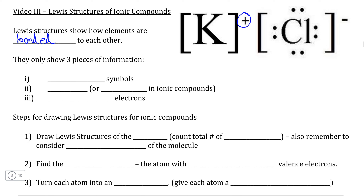In ionic compounds, this is done by highlighting the charge, because it is the attraction between the positive and negative charges of ions that hold multiple ions together. Lewis structures only show three pieces of information, the first of which being the chemical symbol in order to identify the element, as we can see with potassium and chlorine in this Lewis structure here.